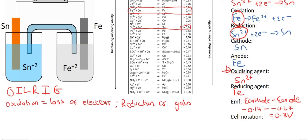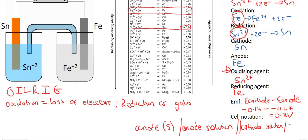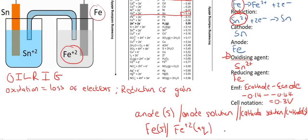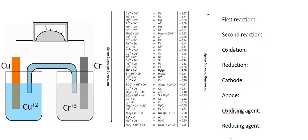Now, cell notation — we said that it always follows the following format: it's the anode, which is typically a solid, then the anode solution which is the liquid part, then a double line to represent the salt bridge, then the cathode solution, and then the cathode which is typically in the solid phase. So the anode was iron — Fe solid. The liquid part is Fe2+ aqueous. Then the cathode solution is Sn2+ aqueous. And then the cathode is Sn solid. So that went fairly quick — let's do another example. If you want, you could pause this video and try this one yourself.